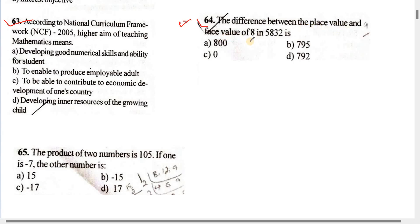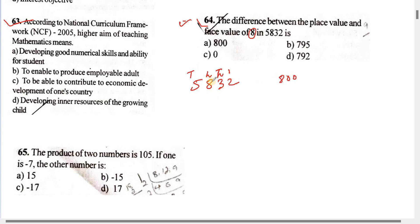For question 64 — the difference between place value and face value of eight in five eight three two: In 5832, we identify the place values — ones, tens, hundreds, thousands — to find where eight sits and calculate the difference.